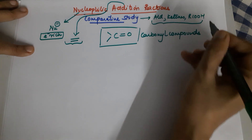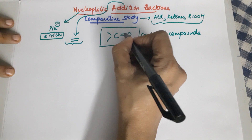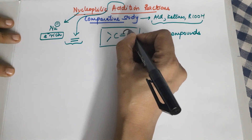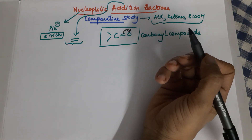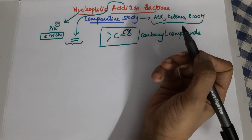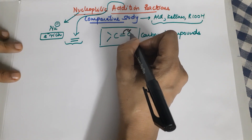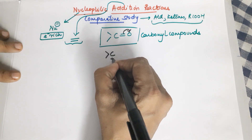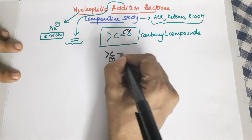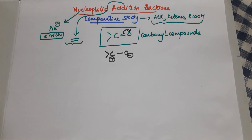The speciality of these carbonyl compounds is that the weak pi bond shifts towards the oxygen. Oxygen, being more electronegative, causes the electrons to shift towards itself. Therefore, carbon is left with a positive charge and oxygen gets a negative charge.